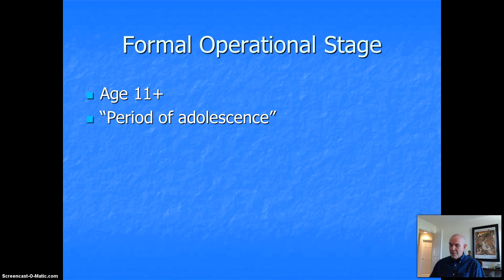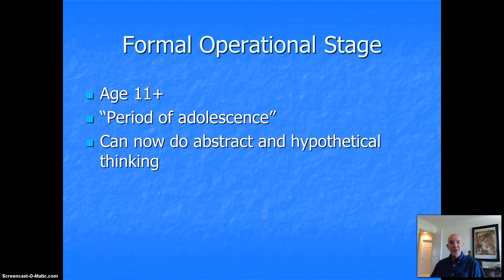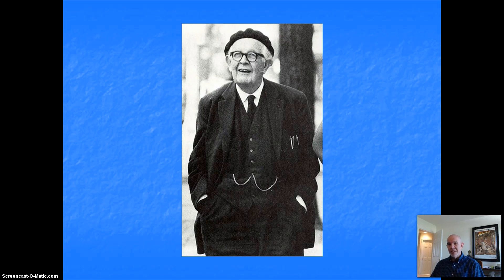The young adolescent can now apply logical thought to abstract, verbal, hypothetical problems — not just in the present, but in the past and in the future. The adolescent can now solve the feathered glass problem. Piaget says that cognitive development is over with now, and the adolescent thinks like an adult. And that's the basics of Piaget's theory of cognitive development.